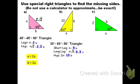The last thing I need to do is identify what the lengths of a and b are. A is away from where the 30-degree angle would be, which means a is the short leg — 5 units. B is away from the 60-degree angle, which would be the long leg, so b is 5 root 3 units.